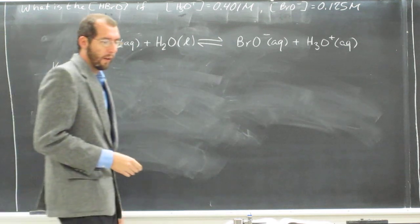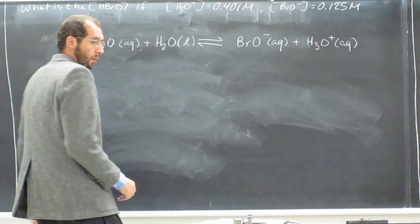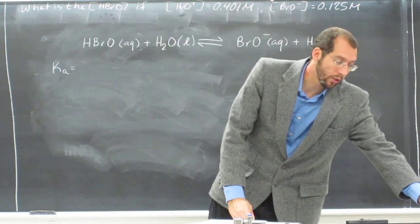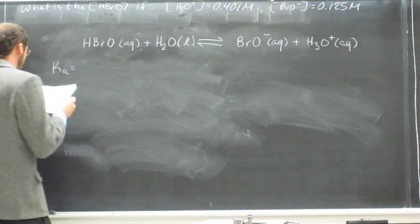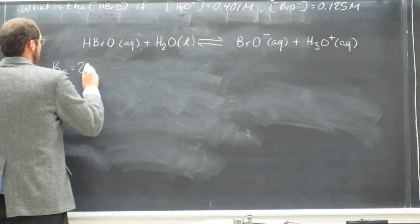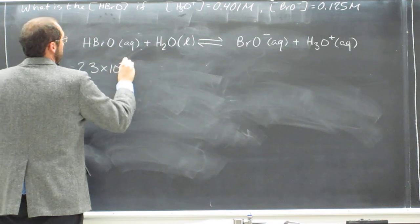And remember, the Ka is going to be given to you, but you also need to figure out the expression for Ka. So we know that the Ka from the table is 2.3 times 10 to the negative 9.